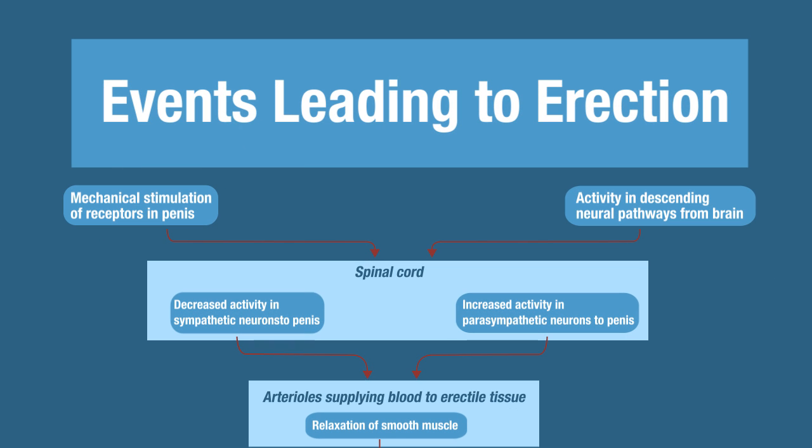We're going to begin with the erection phase. There are two different stimuli that lead to an erection, listed at the top: mechanical stimulation of receptors in the penis, as well as increased activity in descending neural pathways from the brain. These stimuli act on interneurons of the spinal cord, which then increases activity in the parasympathetic neurons to the penis.